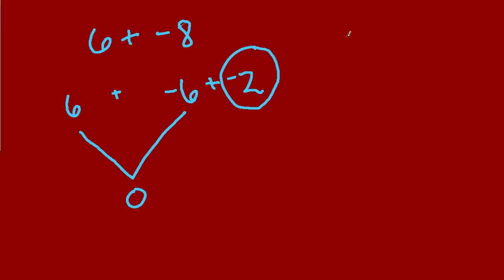Another example, let's say we have a bigger number, like 53, plus negative 66. One way I think about it is that, well, here's 53 positive 1s over here. Here, we have 66 negative 1s.